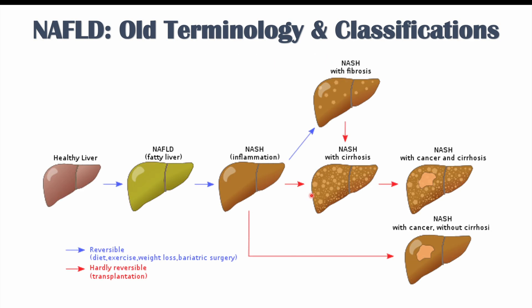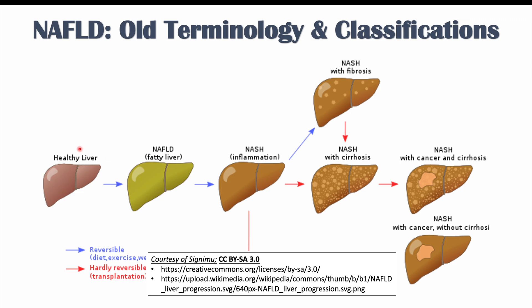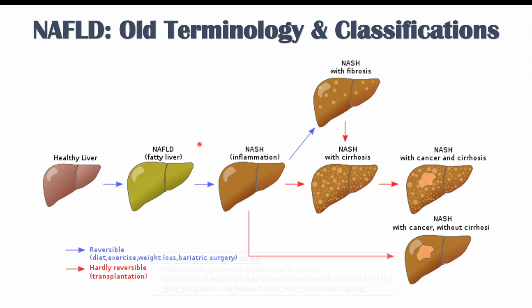What was normally the case was that there'd be a healthy liver that would start to have fatty infiltration — this would be non-alcoholic fatty liver disease. Eventually that fat within the liver would become inflamed, causing damage to the liver tissue; this would be NASH, or non-alcoholic steatohepatitis. That inflammation could cause fibrosis, scar tissue, or even cirrhosis. This was generally how we categorized non-alcoholic fatty liver disease before.